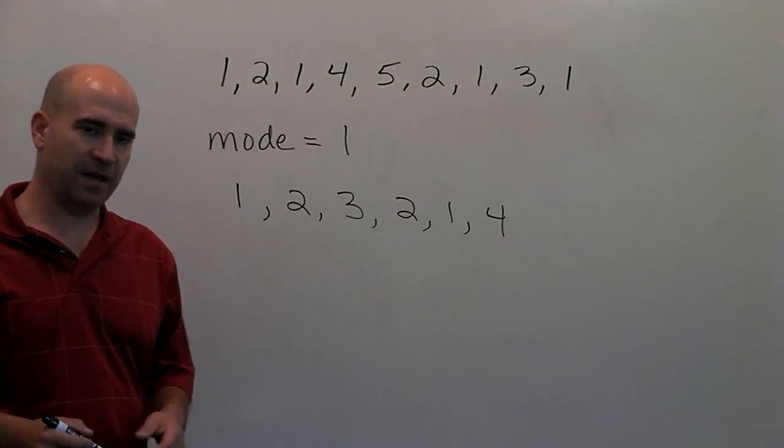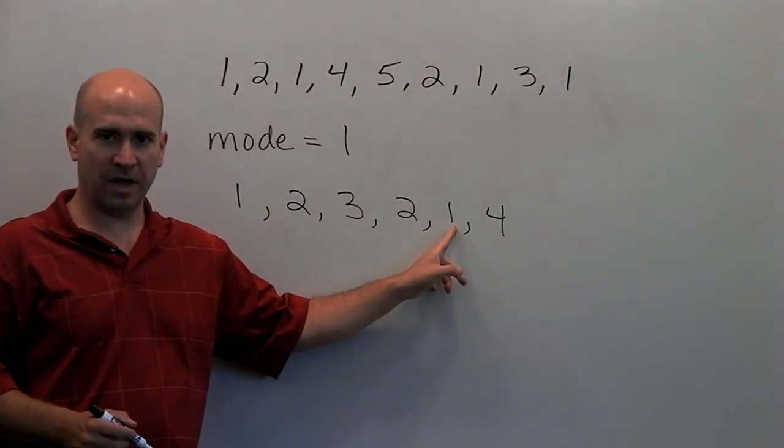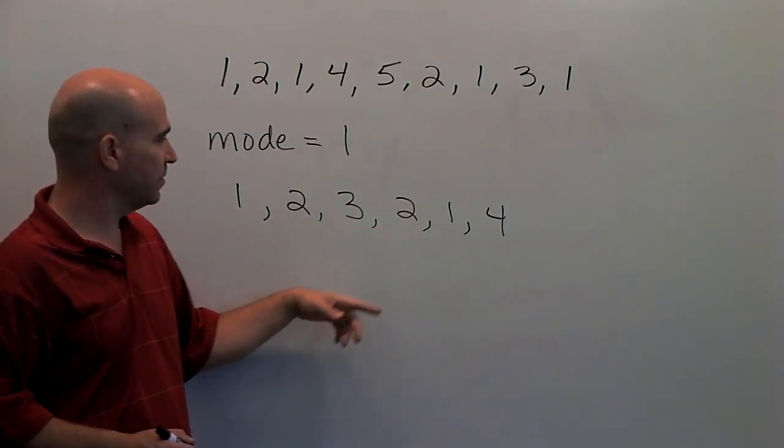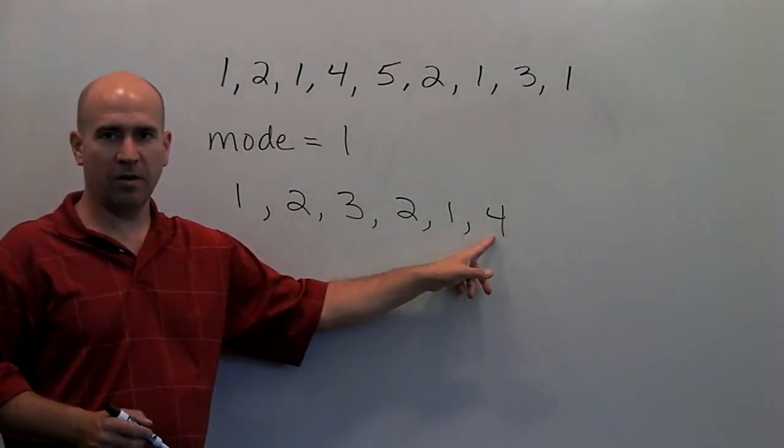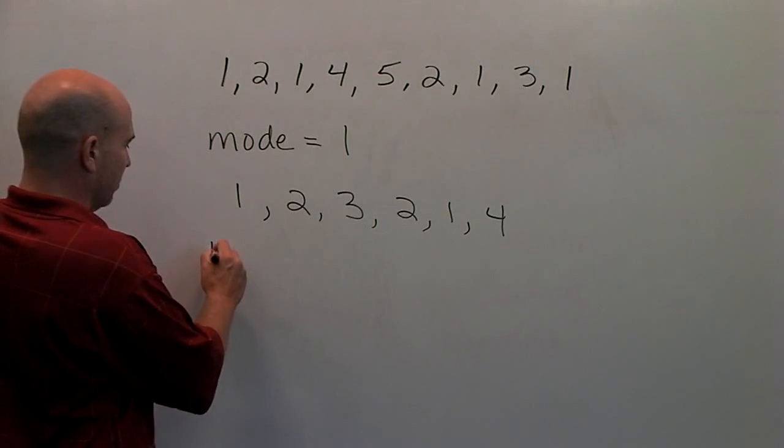notice in this case that the value one occurs two times, and the value two also occurs two times, but three and four only occur once. So here, there are two modes.